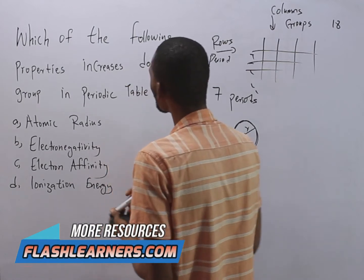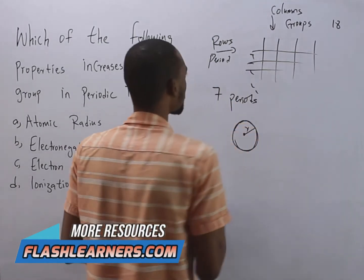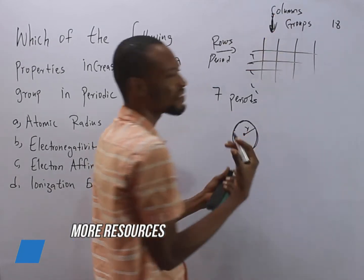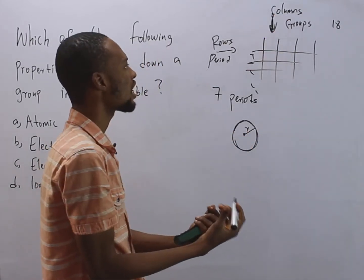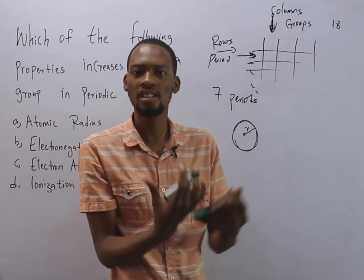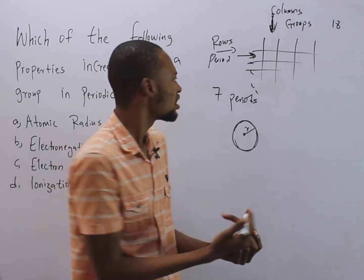Now, it says which of the following increases down a group? So this is group. So it says that down this group, which of them increases? And if we say across the period, which of them increases or decreases?